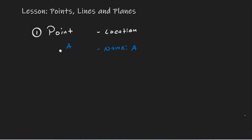Let's give a different example. Let's say we have a different dot with a different capital letter attached to it — let's say there's a B — then I can call this point B. And that's about it. There's really not much to say about points. They're just locations, and we use a capital letter to give a name to it.